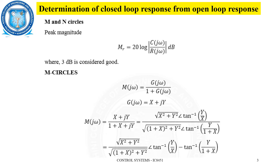For determining the closed loop response from open loop response, we are going to use two different circles — namely M circles and N circles. M circles represent the magnitude of the closed loop transfer function, and N circles represent the phase angle of the closed loop transfer function.